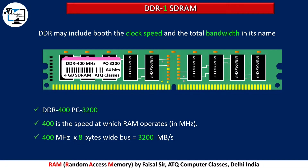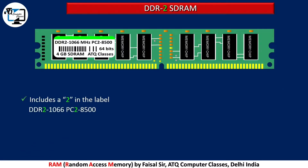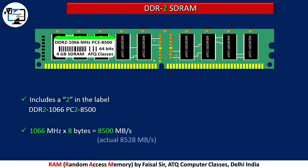DDR1 has 184 pins and 92 pins per side. DDR2 includes a 2 in the label, for example DDR2-1066 and PC2-8500. 1066 MHz multiplied by 8 bytes equals 8528 megabytes per second in actual.